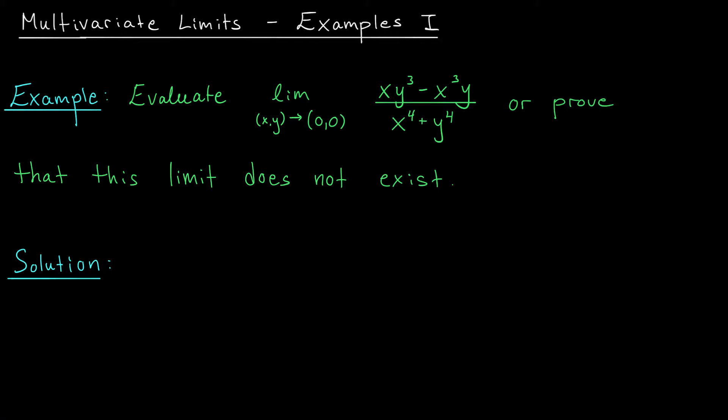Of course, in this case, we'd still have to find some general argument that tells us that the function really does approach the same value along every single path to (0,0). That's a tougher problem to solve, but we'll get to that shortly. For now, since we don't really know what's going on with this limit, let's start by trying a few different paths to get a feel for the problem.